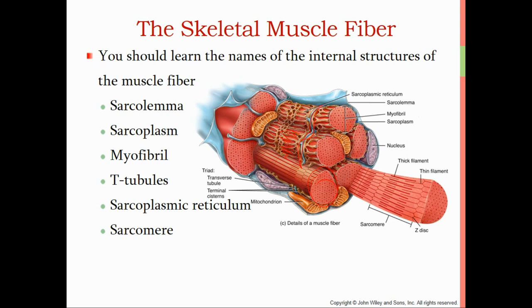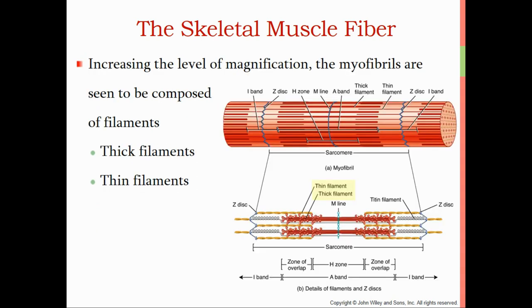And then the sarcomere — the sarcomere is one contractile unit. If we look at this picture, we see a sarcomere bounded from this Z disc, sometimes called a Z line, to this Z disc or Z line. We will discuss the components of a sarcomere shortly. Going up in magnification, we've taken one myofibril and we're going to zoom in and look at the arrangements of the myofilaments, where the physiology is going to get pretty complicated.